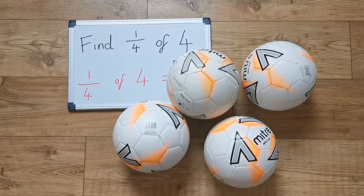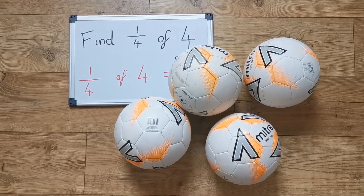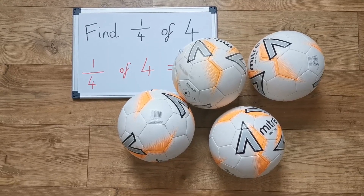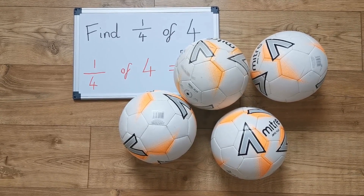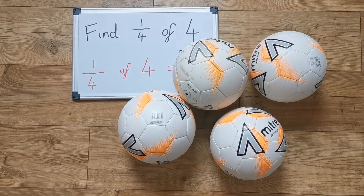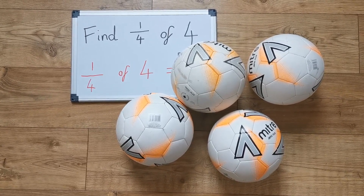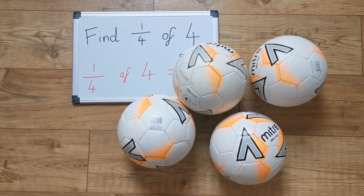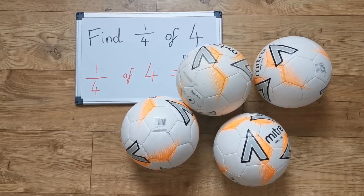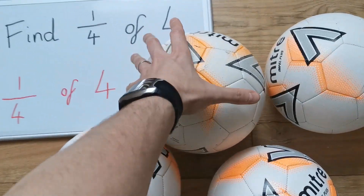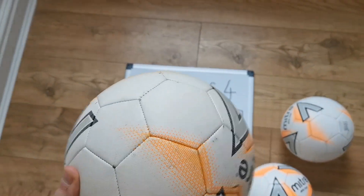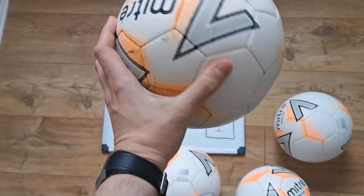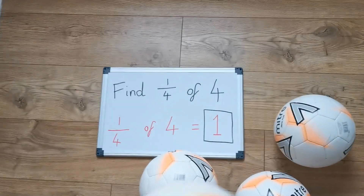Let's look at another example. If I have to find one fourth, or one quarter, of these four footballs, I will look first at the denominator, which tells me that this whole is made of four parts. I then need to look at the numerator, which will tell me how many of the parts I need to take away, which in this case is one. So as we can see, one quarter of four is equal to one. Get in!